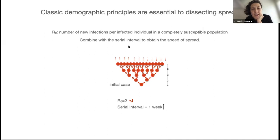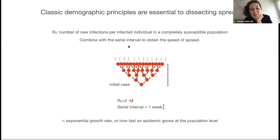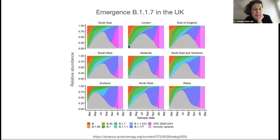R0 is an important quantity — it defines the threshold required for eliminating disease through vaccination. It's always a little puzzling if you come to this as a demographer, because we know there are two different ways to measure population growth. One is R0 and the other is the exponential growth rate, or how fast an epidemic grows at the population level. This combines both aspects — R0 and the serial interval together. This became really important at the end of 2020 when novel variants started emerging. This picture from a Science paper in early 2021 shows the VOC, now called B1.1.7, screaming up in proportions across different parts of the UK.